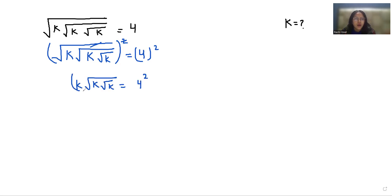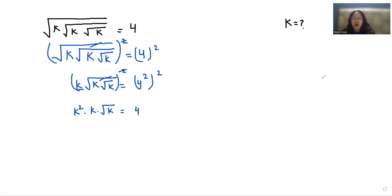Now again I'm doing squaring on both sides. This gives us k squared, and with the help of this square, the square root eliminates. So k times under square root k equals 4 to the power 4.